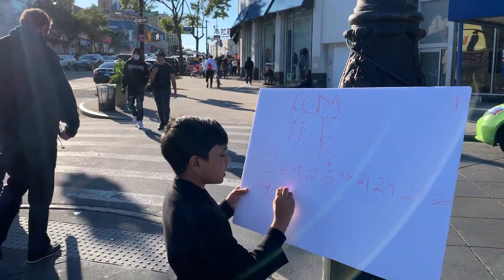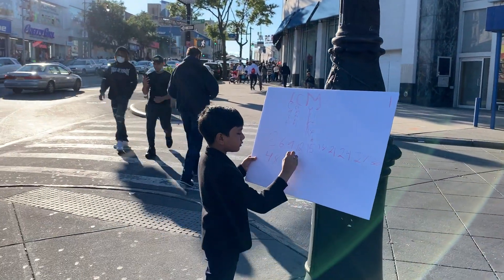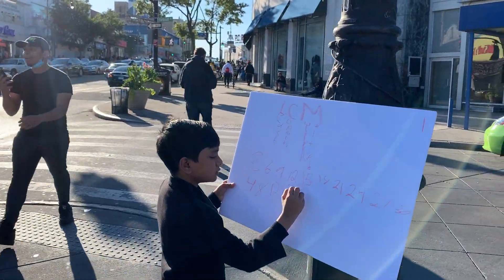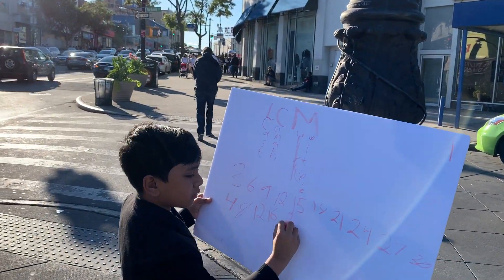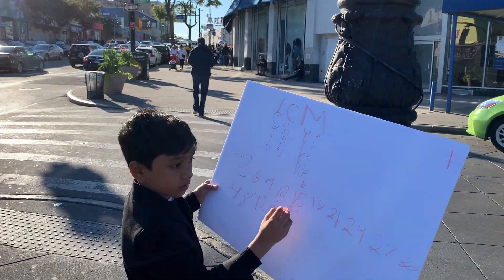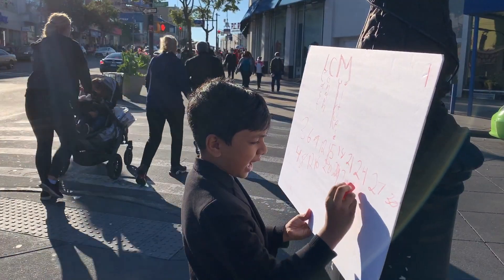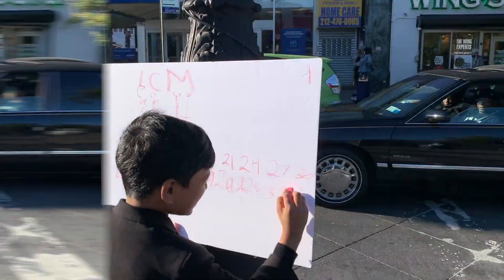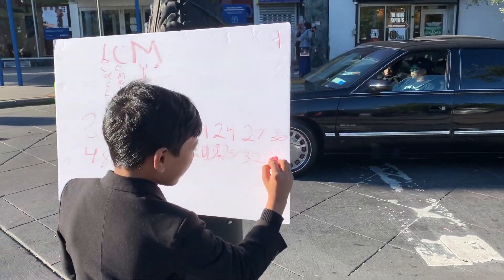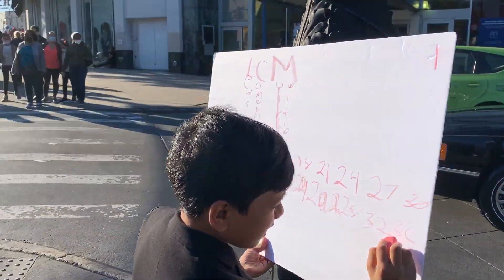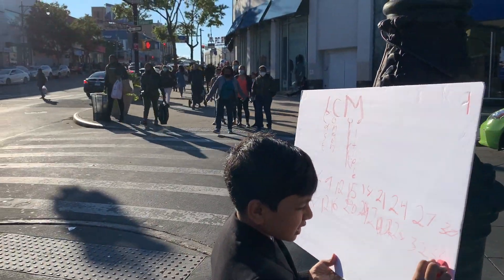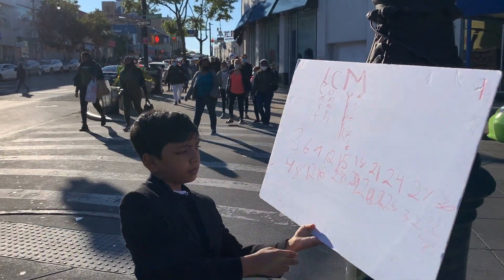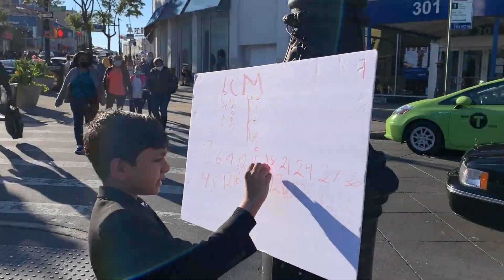Now let's write the multiples of 4: 4, 8, 12, 16, 20, 24, 28, 32, 36, and finally 40.